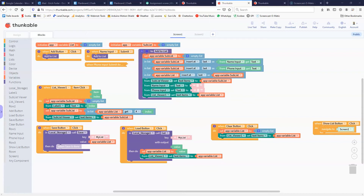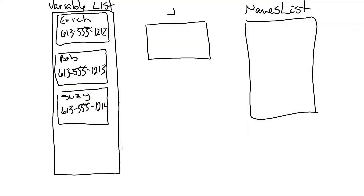This is where we start to use loops. We want to take our loop and go through this list, extract each sub-list on its own, and do something with that data. We've got our variable 'list' which has sub-lists in it for each person and their phone number. When we use a for loop to go through the list, we're basically asking it to take the first item — which happens to be a list — and put it into the variable j. So we get that name with the phone number put into j.